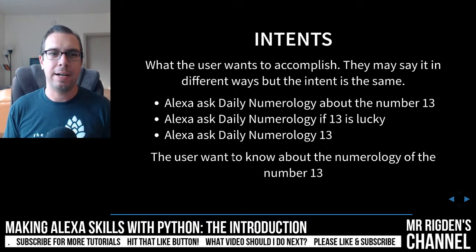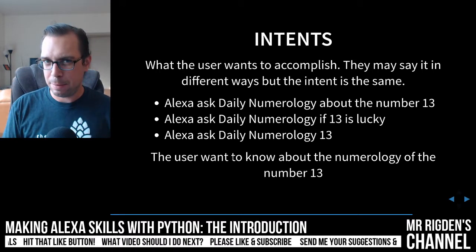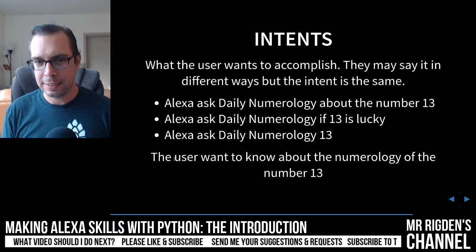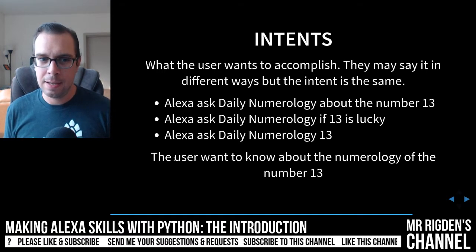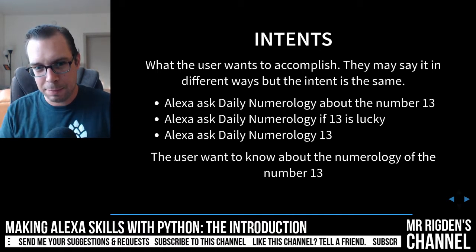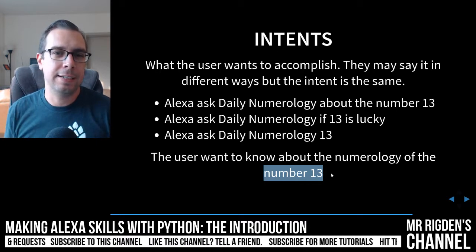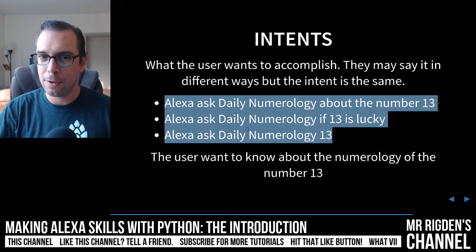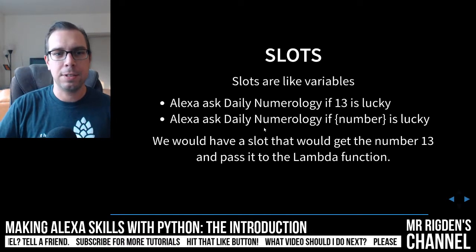Intents are what the user wants to accomplish. They might say it in different ways but the intent is the same. For example: 'Alexa, ask Daily Numerology about the number 13,' 'Alexa, ask Daily Numerology if 13 is lucky,' and 'Alexa, ask Daily Numerology 13.' These are all different ways of saying the same thing — the intent is to know about the numerology of the number 13. We map all these utterances to an intent.